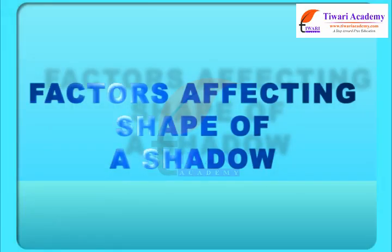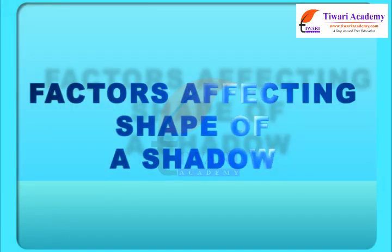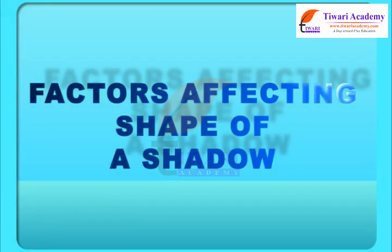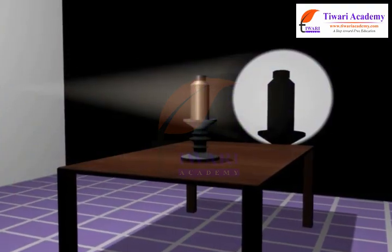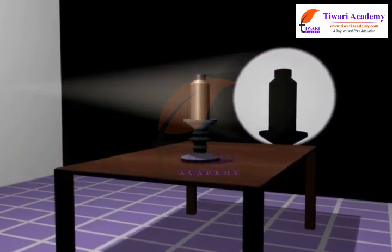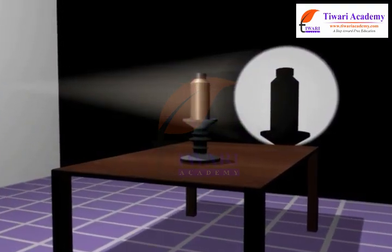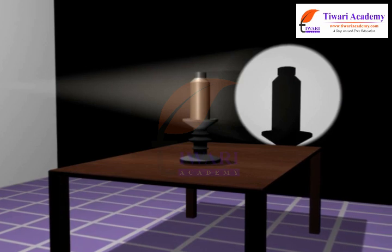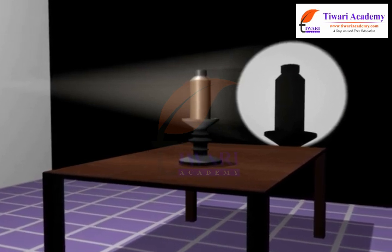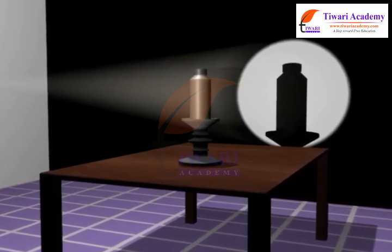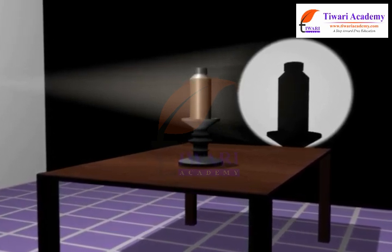Factors Affecting Shape of a Shadow. The shape of the shadow of an object depends neither on the color of the object nor on the color of the screen.